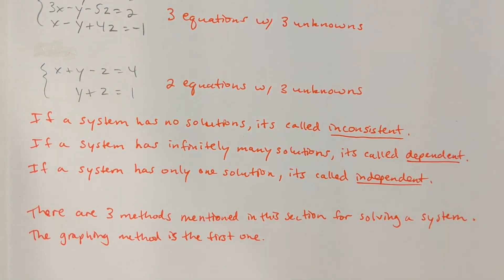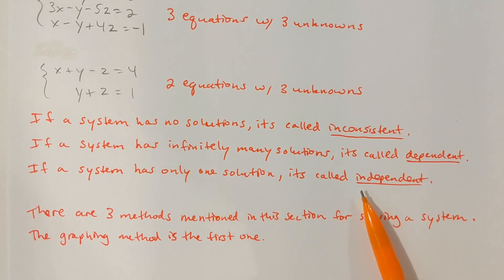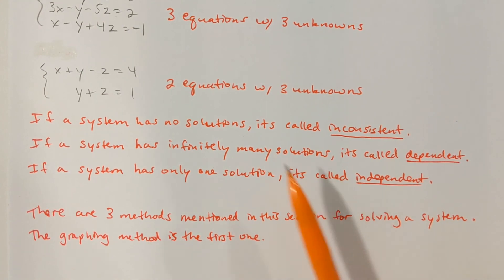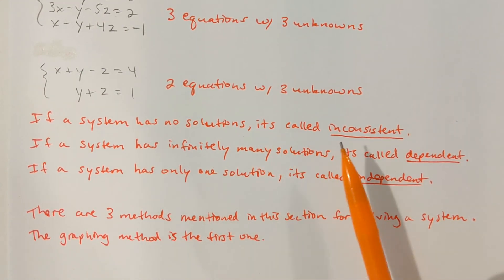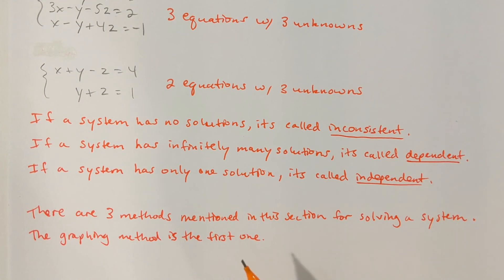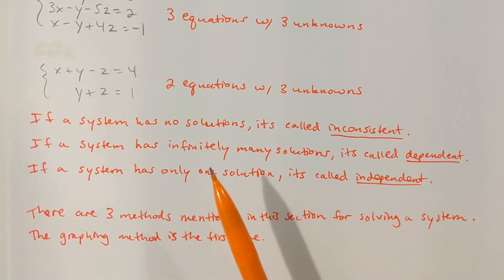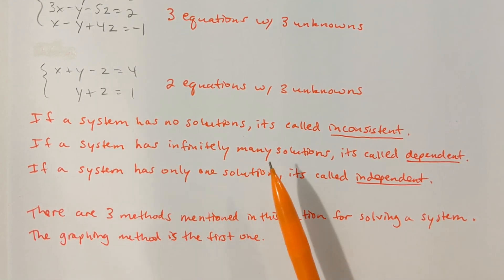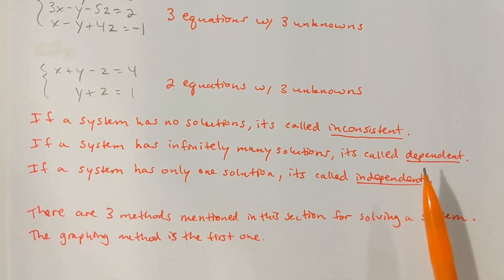If a system has a solution, it's called independent. Sometimes a system will have no solutions — we call that inconsistent. And sometimes a system will have infinitely many solutions — we call that dependent.